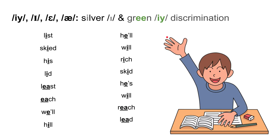Let's do a little listening discrimination — listen carefully. Is it a silver E or a green E? Lift your left hand if it's silver E, lift your right hand if it's green E. So I'm going to say these words — see if you can hear the difference. Left hand: silver E. Right hand: green E. Here we go.